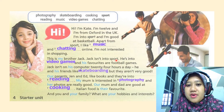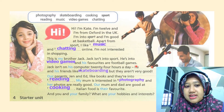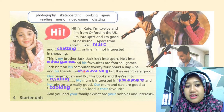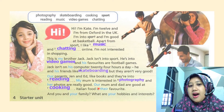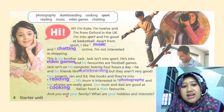This is my brother Jack. Jack isn't into sport — he's into video games and his favourites are football games. Jack isn't on his computer 24 hours a day. He and his friends like skateboarding, but they aren't very good. Our parents, Jen and Ed, like books and they're into reading. My mum is interested in photography — this is the mum — and her photos are really good. Our mum and dad are good at cooking. Italian food is their favourite.